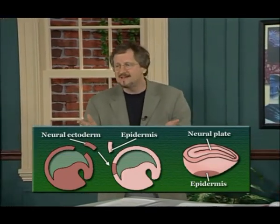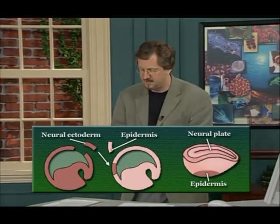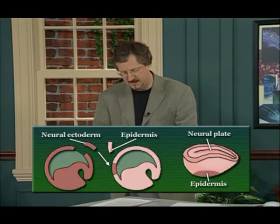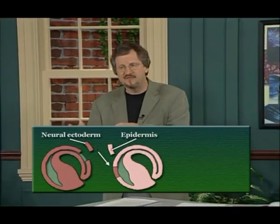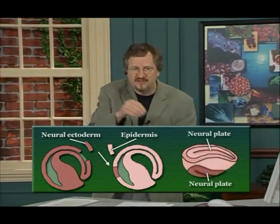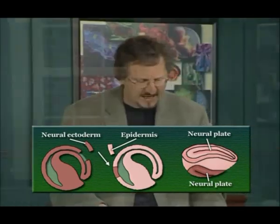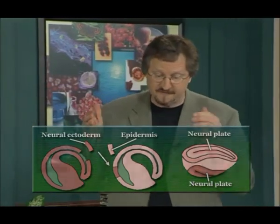The interesting thing was that Spemann would only get this result if the transplant was done early enough. If he performed these transplants later on in development, the transplanted tissue would not change its developmental fate. In other words, at a later stage, a transplanted piece of neural ectoderm would turn into a small piece of nervous system tissue wherever it was put in the organism. These experiments demonstrated two points. First, the fate of tissues is progressively determined — not surprising, as we've seen this in how blastomeres become progressively determined during early cleavage. Second, and most important, this result showed that the fate of cells can be determined by the region in which they're located, presumably because they're receiving signals from the cells around them.